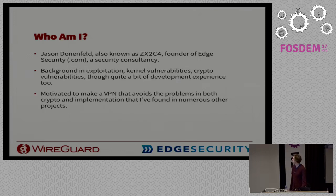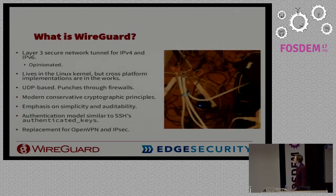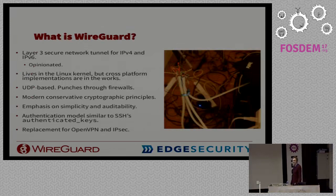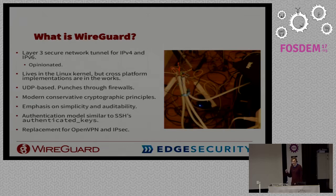So what is WireGuard? It's a layer 3 network tunnel — only for IP, not for layer 2, not for Ethernet, just a layer 3 network tunnel. It makes a lot of choices like that. It's only for layer 3. It only does particular things because it's opinionated. It's made with a series of design considerations where the choice has been made for you in a lot of ways. But from these boiled-down choices, we make nice building blocks that you can build big complicated systems out of.